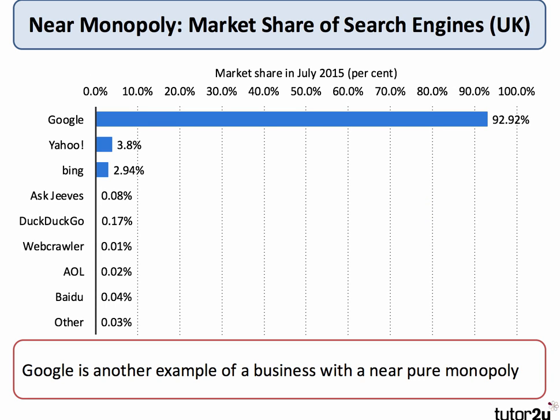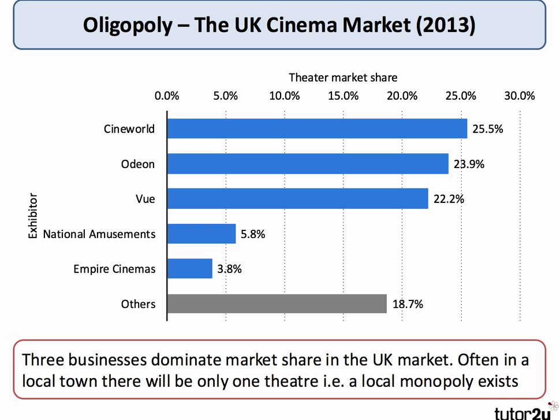Here's a good example again of a near monopoly. Google had over 92% of market share in the search engine market in the UK, which has now dipped below 90%. Google is of course involved in long-running discussions with the European Competition Commission about the dominance of the market.